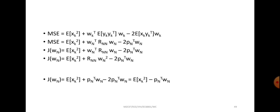The mean square error is defined as the cost function j(w_n). The cost function is rewritten as: expectation of x_k squared plus R_nn times w_n squared minus 2 p_n transpose into w_n. Our criterion is to minimize the mean square error, meaning we need to find the minimum value of the cost function j(w_n).